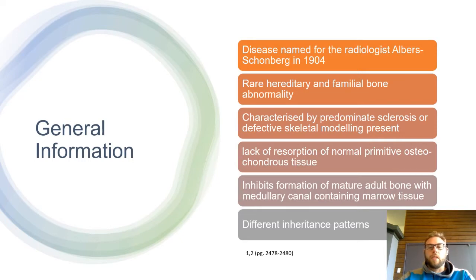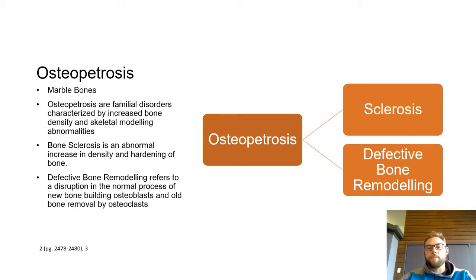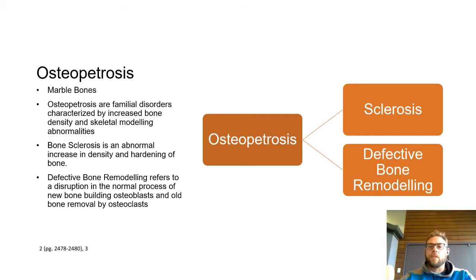To understand the different inheritance patterns, we first need to understand what osteopetrosis is. It is clinically known as marble bones, and it is a familial disorder characterized by increased bone density or skeletal remodeling defects. Osteopetrosis is the big category, with two subcategories: bone sclerosis and defective remodeling.